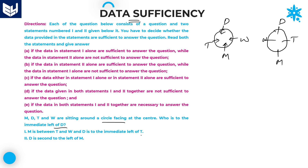And D is immediate left of T. In this diagram, D is immediate left of T — this is the true diagram. But if you see the other one, D is immediate right of T. He is saying immediate left, so the second diagram is wrong. Therefore our final diagram is this one: T, M, W, D. You got the final diagram by using statement one alone.